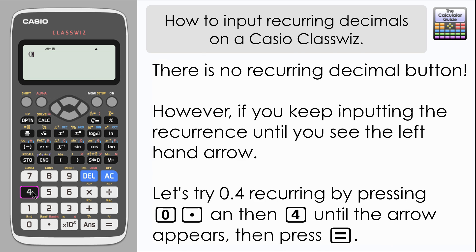Let's try 0.4 recurring, which is 4/9. Keep pressing the 4 until you see the left-hand arrow, then press equals, and here's the fraction equivalent: 4/9.